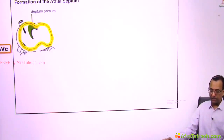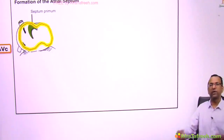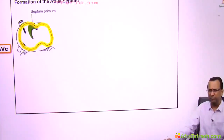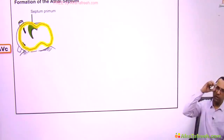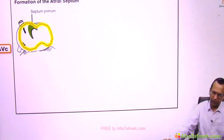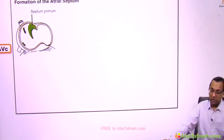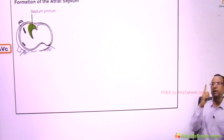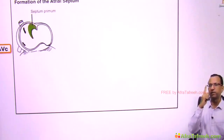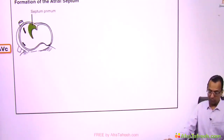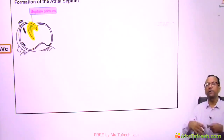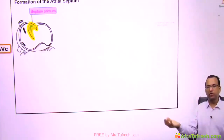Now this primitive atrium will divide into two. How? There is a septum — the first septum — and because it is the primary septum it is called septum primum. This septum primum is going to fuse with the atrioventricular cushion and divide the primitive atria into a right atrium and a left atrium.